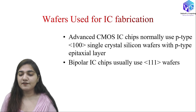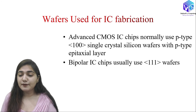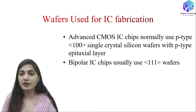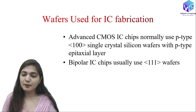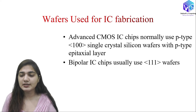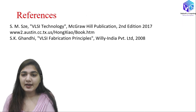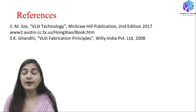For the wafers used in IC fabrication: advanced CMOS IC chip processing uses P-type (100) single-crystal silicon wafers with a P-type epitaxial layer. For bipolar IC chips, we use (111) orientation wafers.